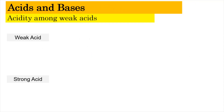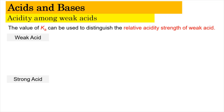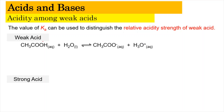The higher the degree of dissociation means that it's going to be a stronger acid or a stronger base. Now let us look into the acidity among the weak acids first. The value of Ka will be the major parameter in order for us to distinguish the relative acidity strength of the weak acid. Let's say if we have a weak acid which is ethanoic acid — when it dissolves in water, it's going to dissociate into forming an ethanoate ion and the hydronium ion will be formed, where the water takes up the proton from the acid.